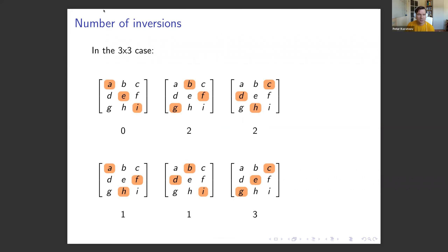For the 3x3 case, drawing arrows: some terms have zero inversions, some have two, some have one, and one term has three. The terms with an even number of inversions enter with plus signs — the first group of three terms. The terms with an odd number of inversions — the last three terms — enter with minus signs. That is how the sign rule works.